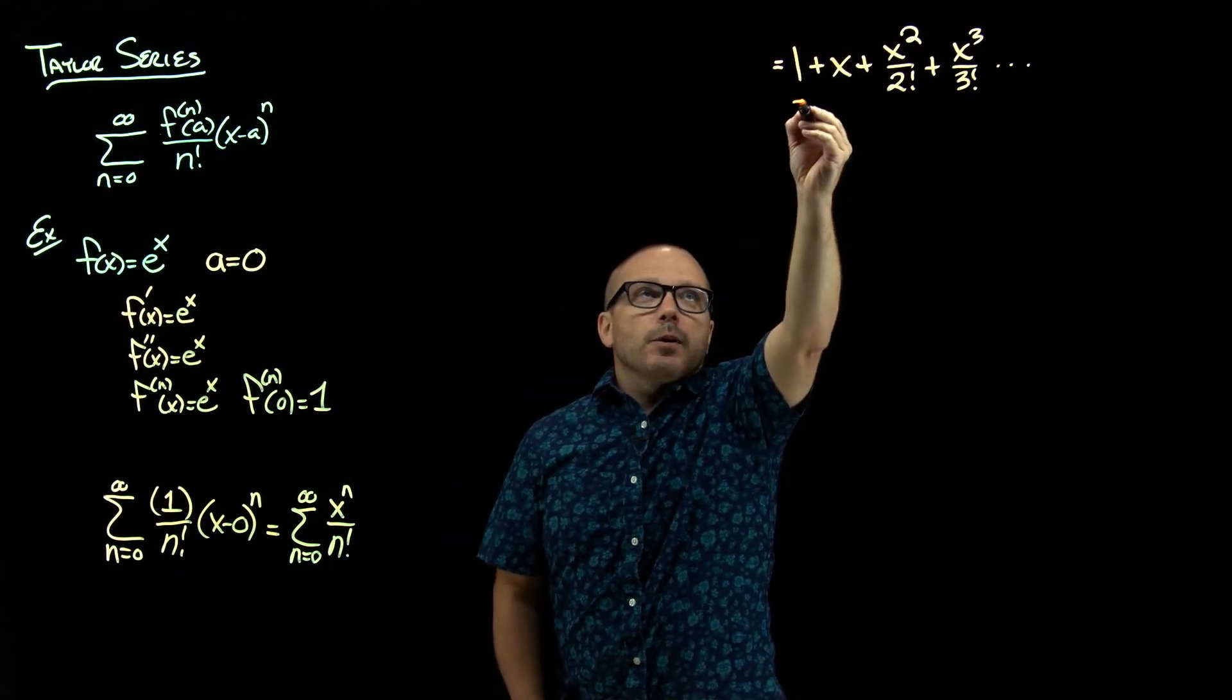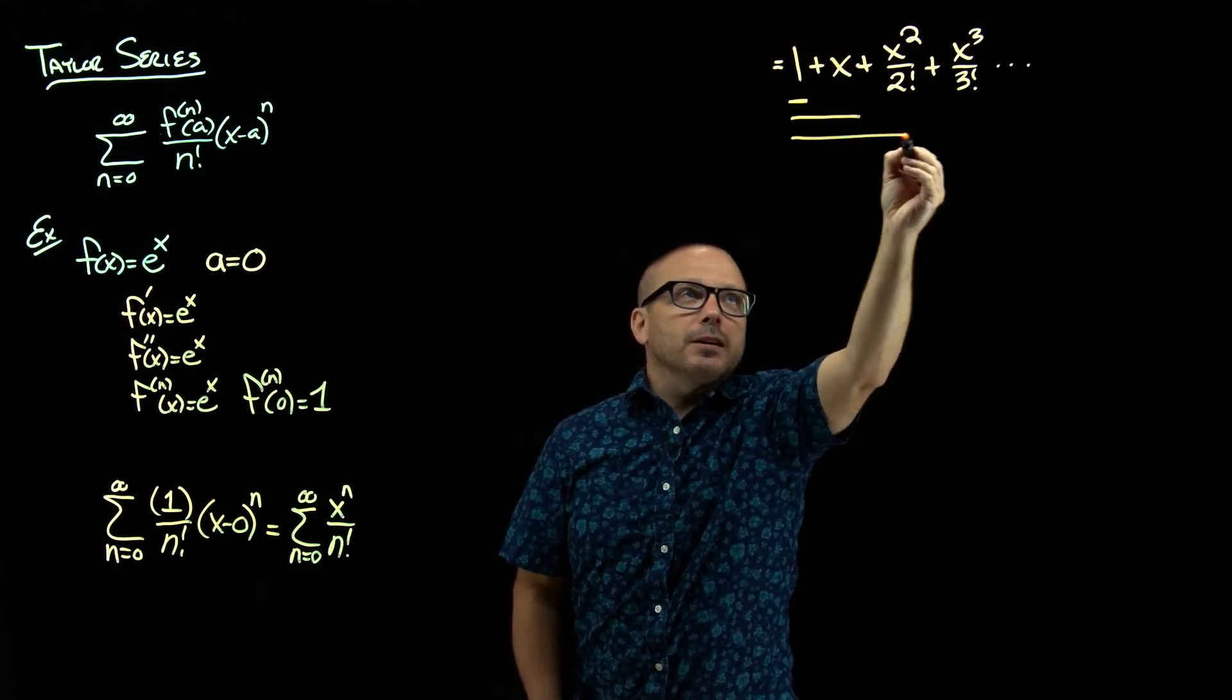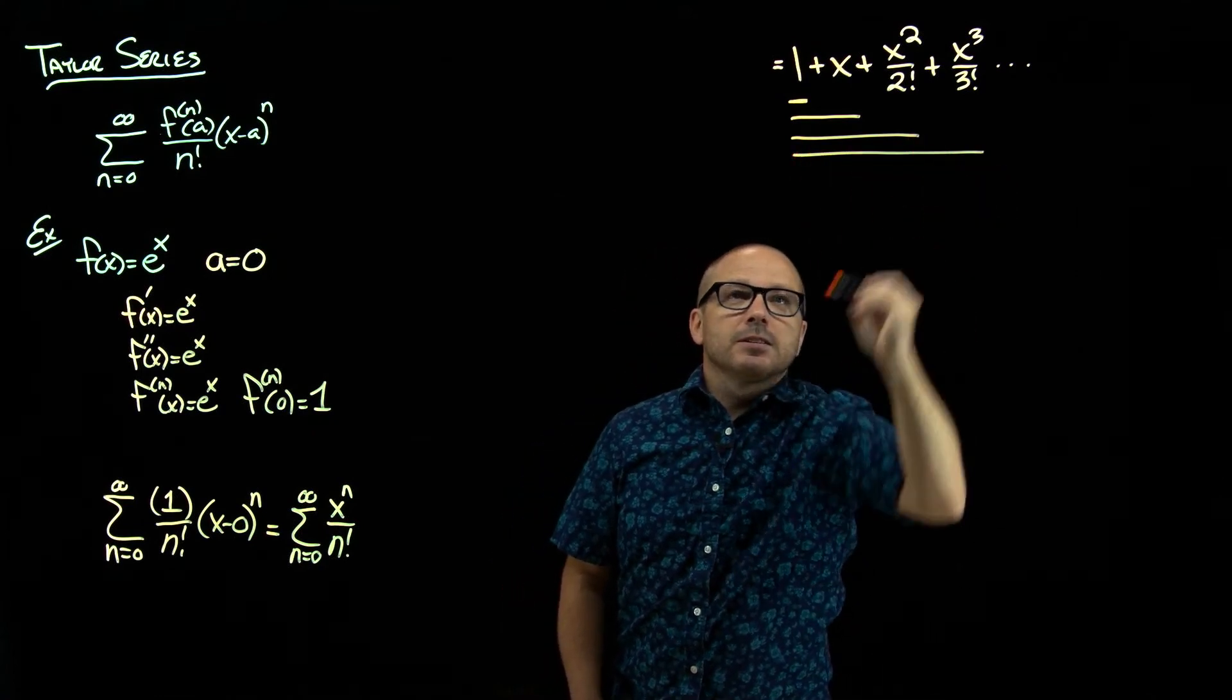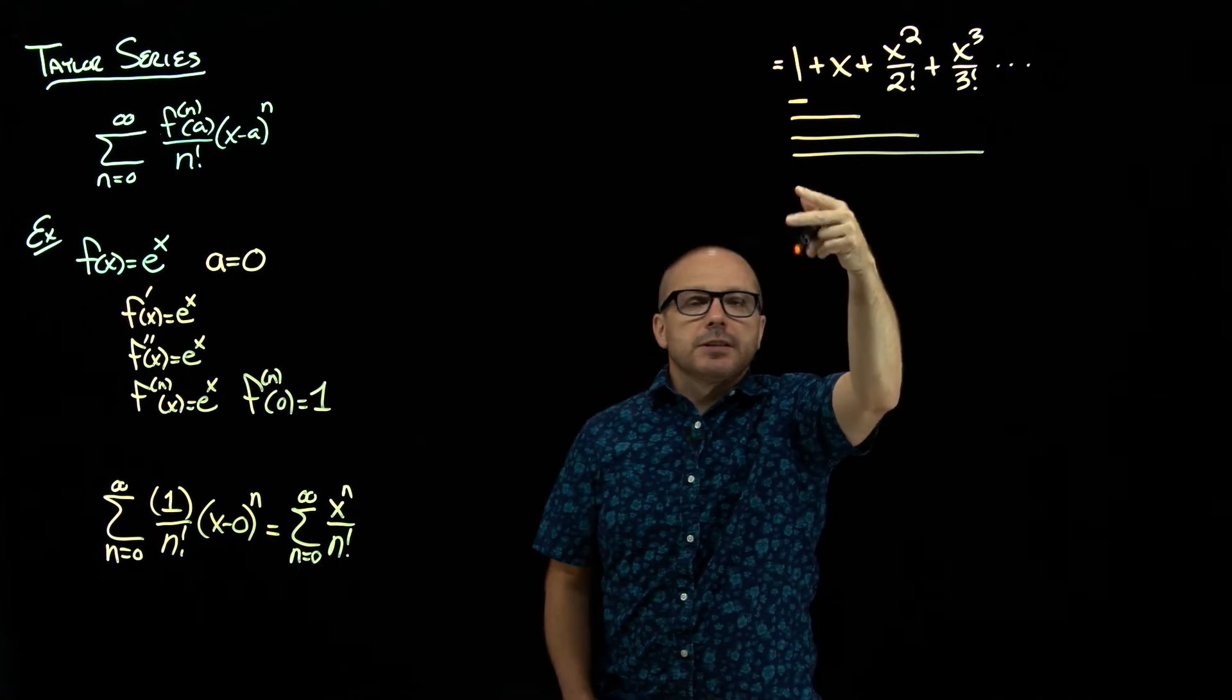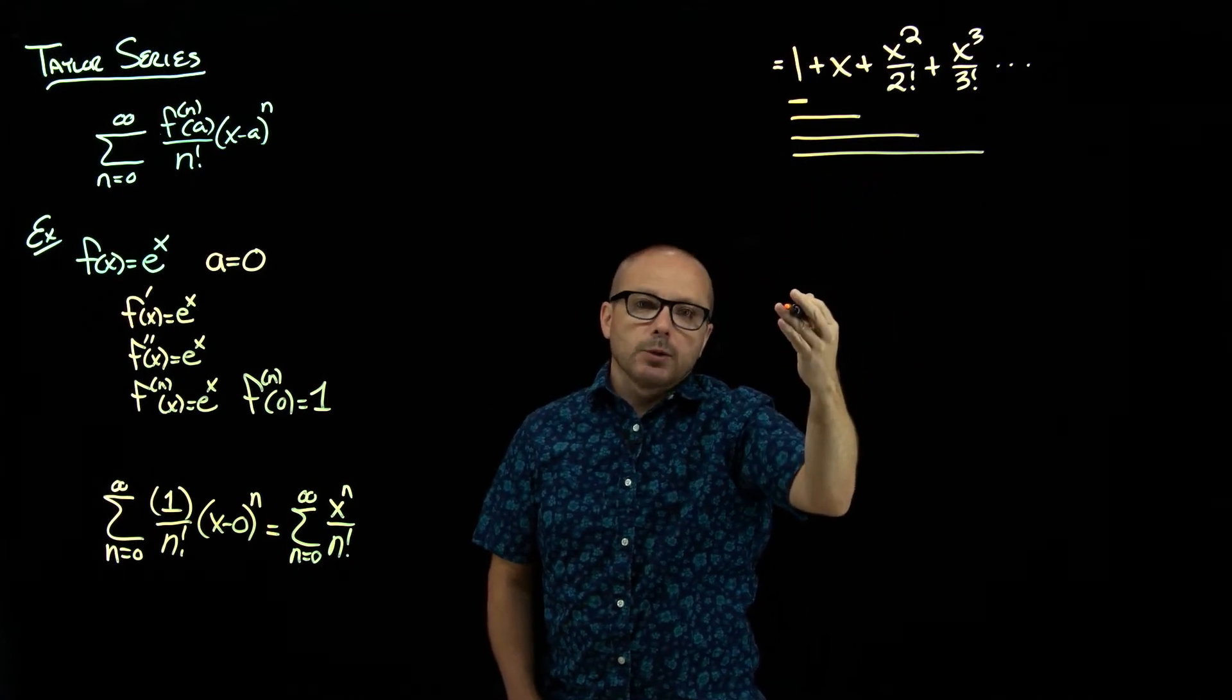There's our first partial sum, our second partial sum, our third partial sum, and so on. Because the partial sum of a Taylor series is a polynomial, we call them Taylor polynomials.